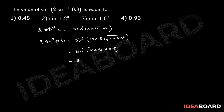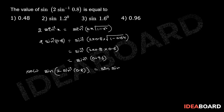That equals sin inverse of 0.96. So sin of 2 into sin inverse of 0.8 equals sin of sin inverse of 0.96, which equals 0.96. The correct answer is the fourth option.